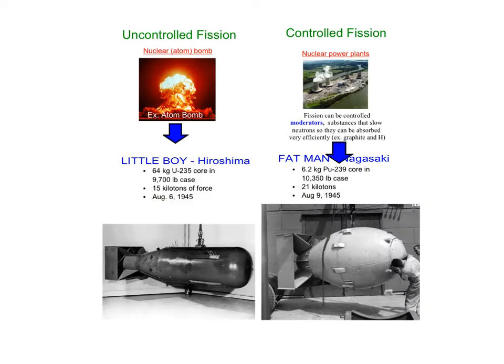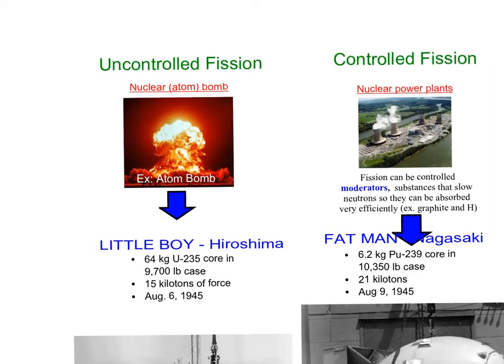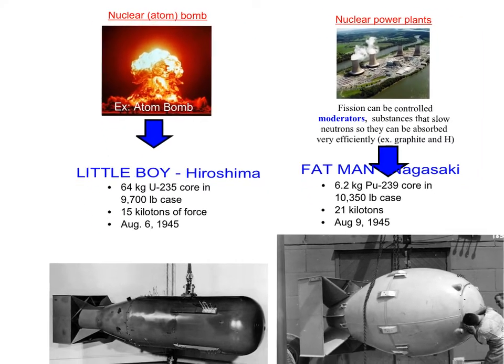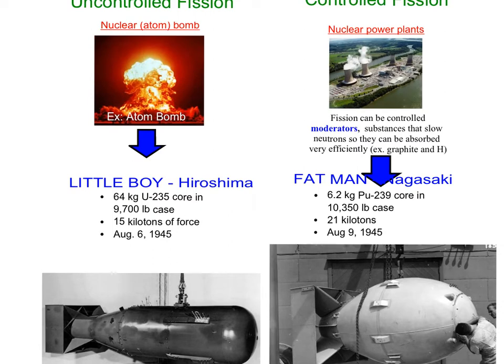Fission can be either controlled or uncontrolled. If it is uncontrolled, you get the atomic bomb. The two cases where it was ever used were Little Boy and Fat Man, the bombings in Japan that ended World War II. There are some really brilliant stories behind their development.